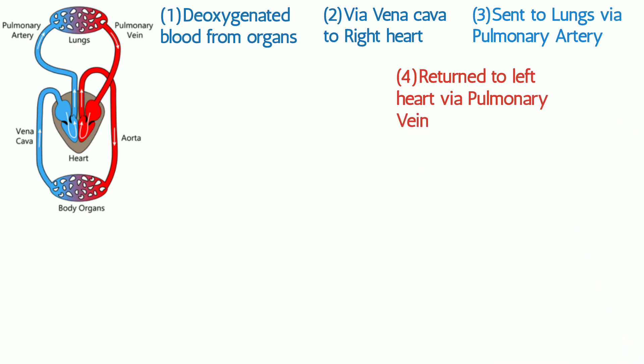The oxygenated blood then returns to the left atrium via pulmonary vein and is sent for distribution by the left ventricle via aorta.